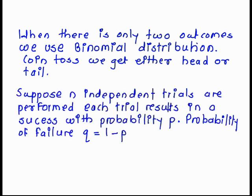Suppose n independent trials are performed, each trial results in a success with a probability p, then obviously the probability of failure q is equal to 1 minus p.